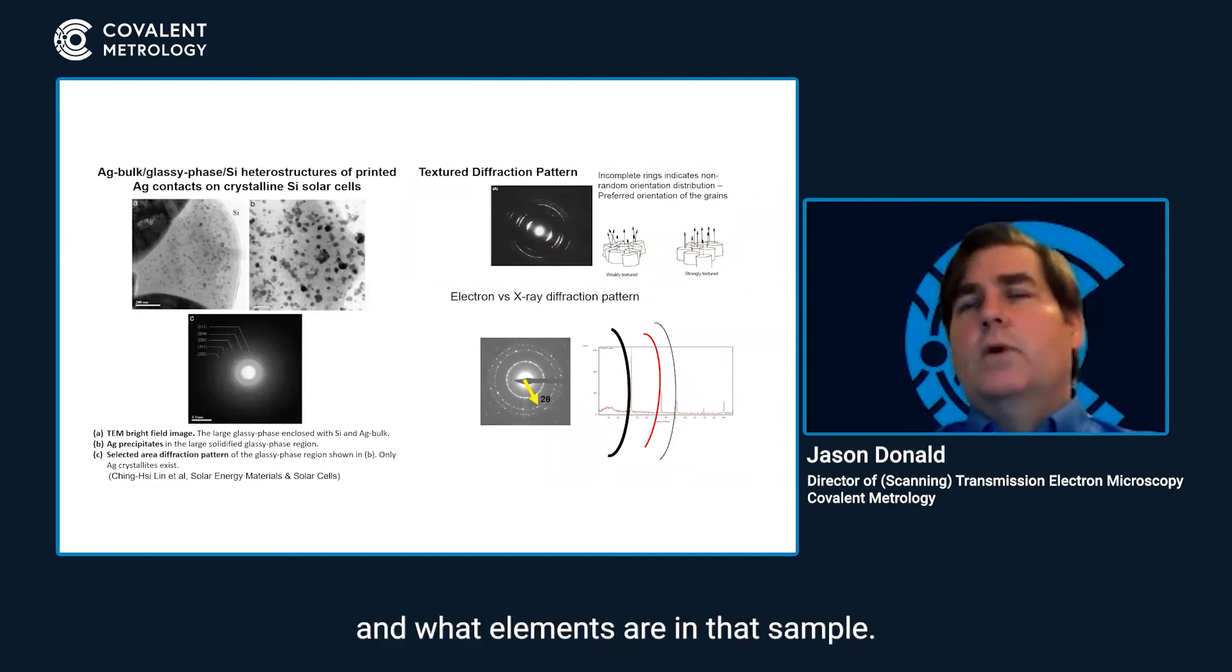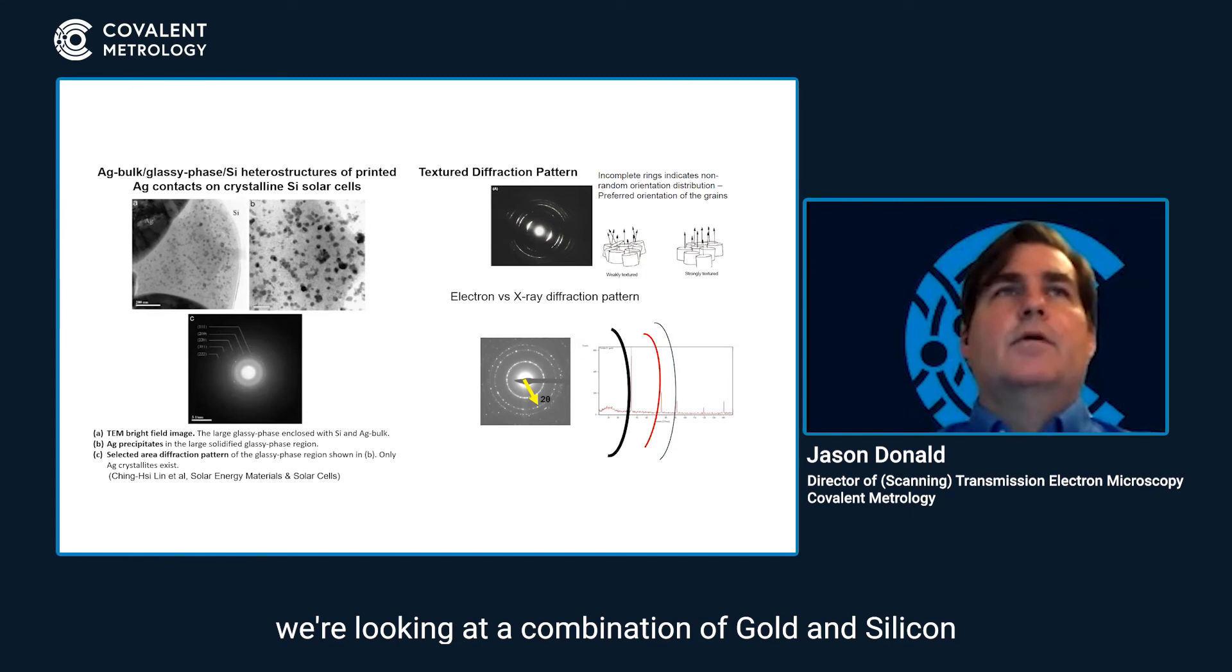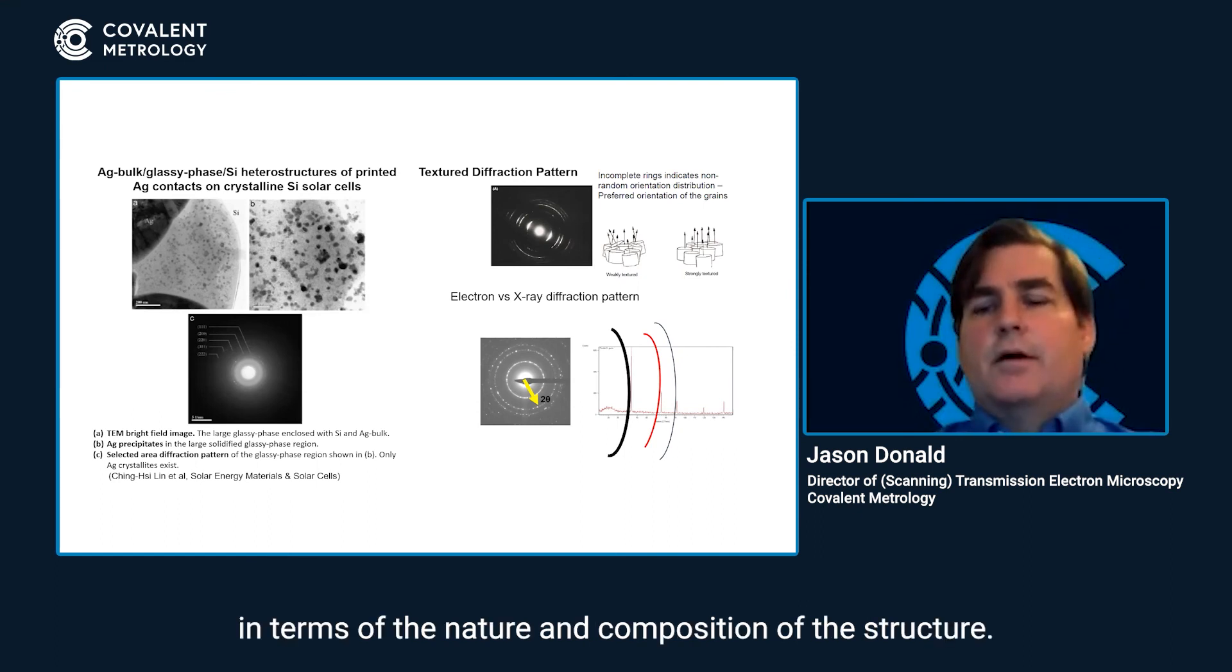And as can be seen here on the left, we're looking at a combination of gold and silicon and we can actually see how those impact the diffraction rings and which ones are crystalline, which ones are amorphous, and what is available in that image in terms of the nature and composition of the structure.